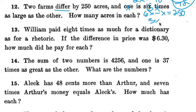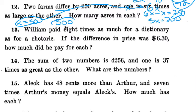6x minus x is 5x equals 250. Divide both sides by 5, and x equals 50, that's the smaller. How many acres in each? So 6 times 50 equals 300. So those are two answers: one of them is 50 acres, and the other is 300 acres.